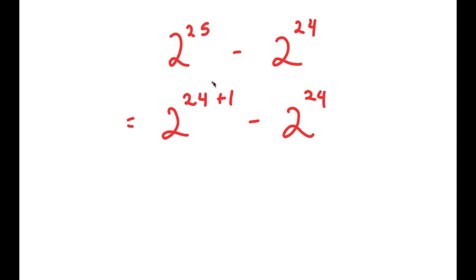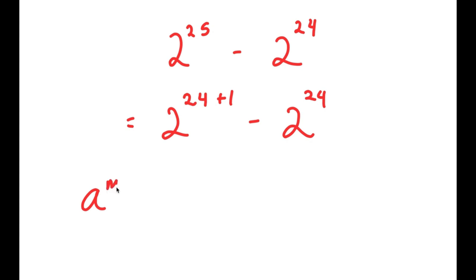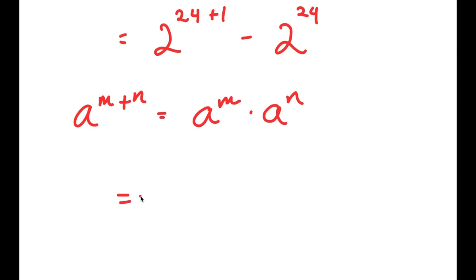The reason I did this is because we want both of these to be the same — we want to have 2 to the power of 24s. The best way of changing 2 to the power of 25 into 2 to the power of 24 times something is to rewrite it as 2 to the power of 24 plus 1. Now I can use the property a to the power of m plus n equals a to the power of m times a to the power of n. So 2 to the power of 24 plus 1 turns into 2 to the power of 24 times 2 to the power of 1, and I still have this minus 2 to the power of 24.